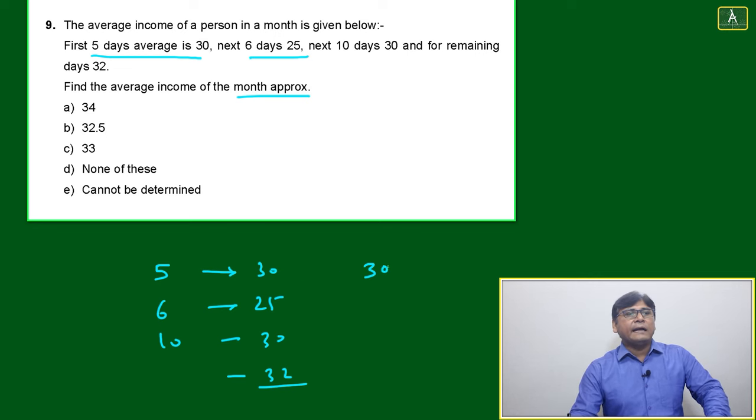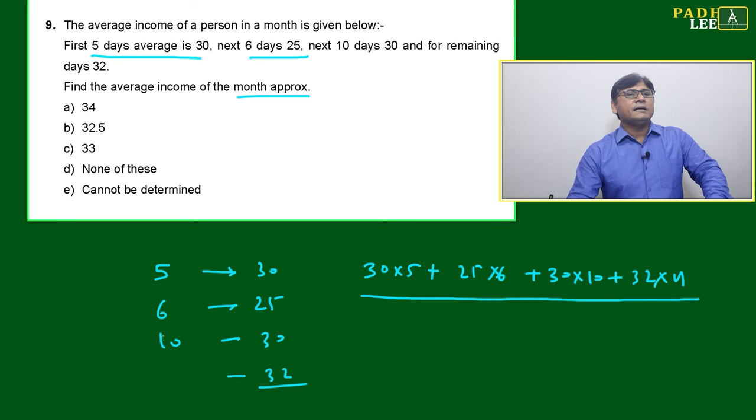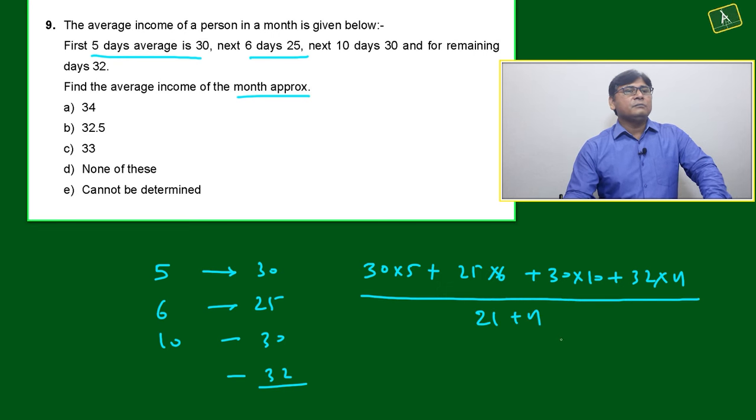We can use the formula: (30×5 + 25×6 + 30×10 + 32×n) divided by (5 + 6 + 10 + n). That's fine, but the issue is we don't know the exact value of n.